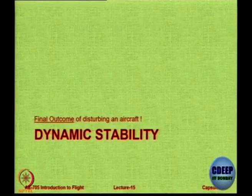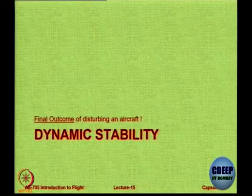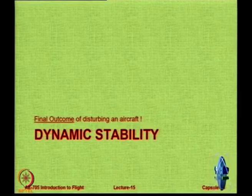To sum up static stability: it is basically only the initial tendency of the aircraft to respond to disturbance on its own. If the initial response is to tend to return to the undisturbed position, it is statically stable. If it neither comes back nor goes away, it is neutral. If it wants to go further away, it is unstable statically.